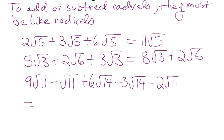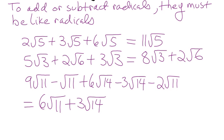Let's do another similar one: 9 root 11 minus root 11 plus 6 root 14 minus 3 root 14 minus 2 root 11. We have 9 root 11 minus 1 root 11 — if there's no number in front, the number is 1 — minus 2 root 11 gives 6 root 11. Then plus 3 root 14. Keep in mind we don't try to say that's 9 root 25 or something — those are not like terms, you can't combine them. So we end up with just root 11s and root 14s.